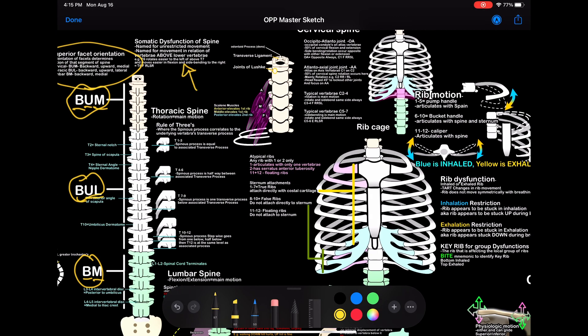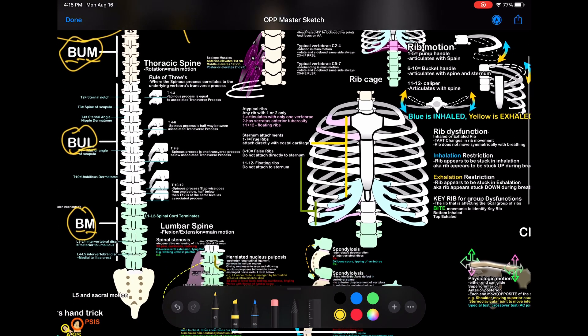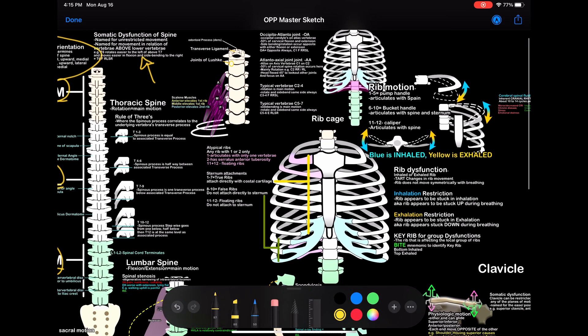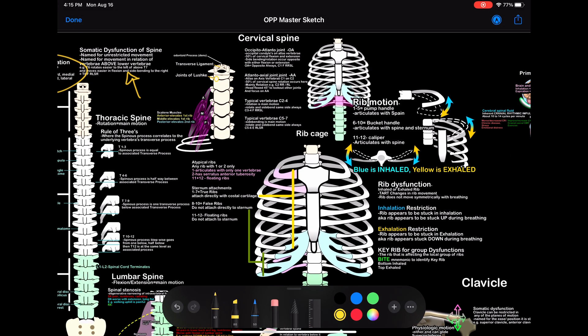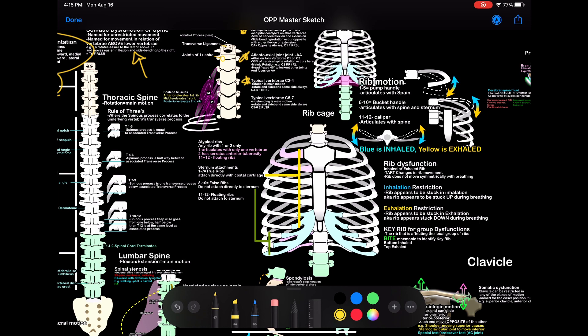Right here tells you how to name a somatic dysfunction of the spine. Starting at the top — cervical spine. You have the OA joint, the occipital atlanto joint. OA: opposite always — rotation and side bending are always opposite. Then we have the atlanto-axial joint; movement of this is rotation. Then we have the typical vertebrae — rotation and side bending are always the same.